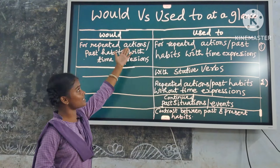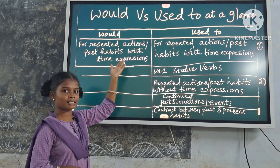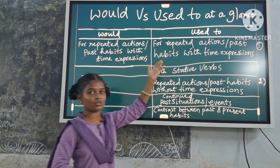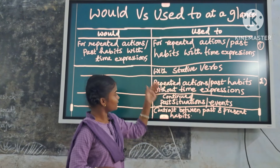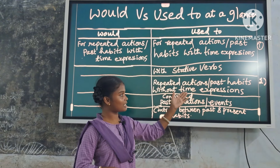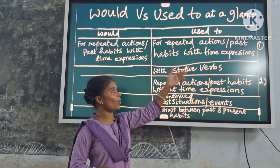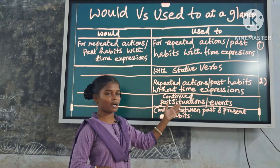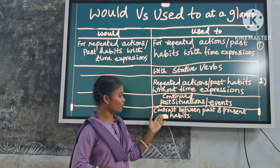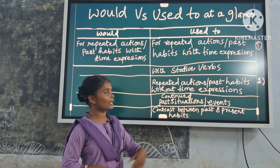Would versus used to at a glance. For repeated actions or past habits with time expressions, we use both 'would' and 'used to'. But with stative verbs, we use only 'used to'. For repeated actions or past habits without time expressions, we use only 'used to'. For continued past situations or events, we use only 'used to'. For contrast between past and present habits, we use only 'used to'.